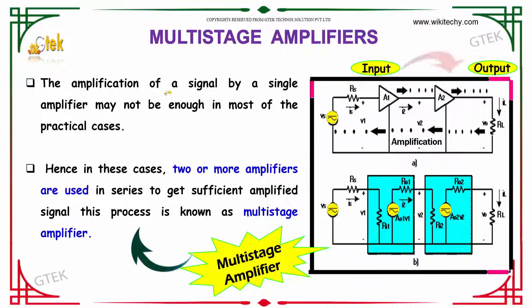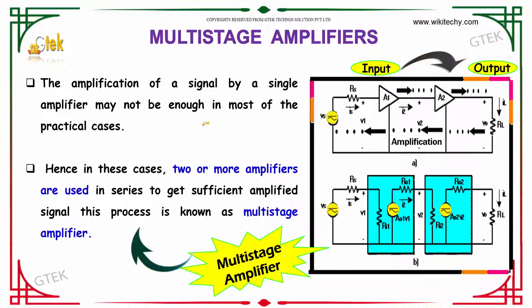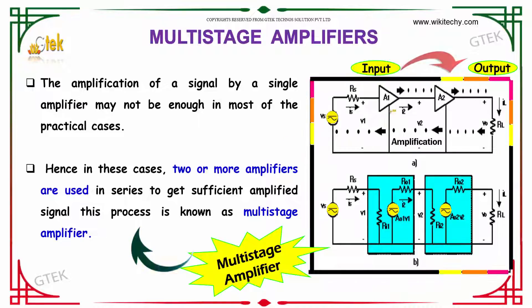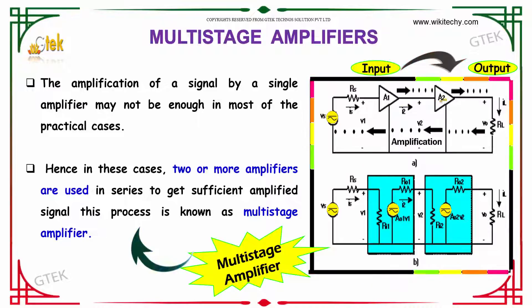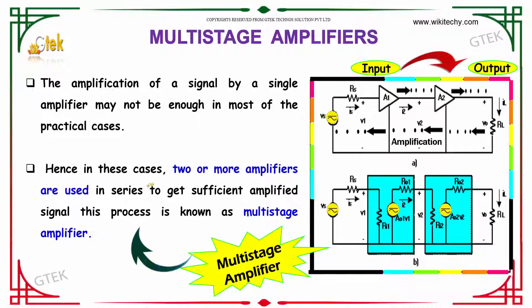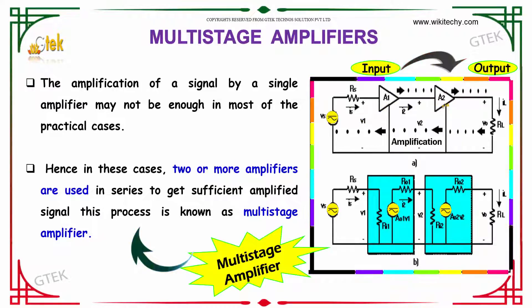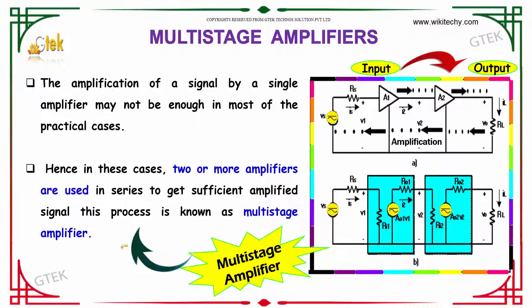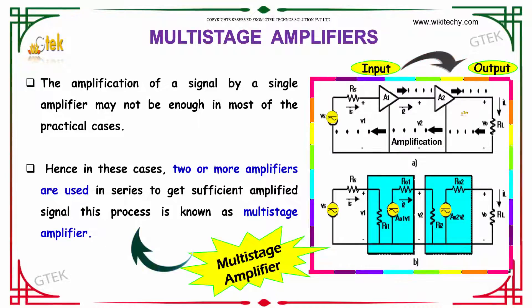The amplification of a signal by a single amplifier may not be enough in most practical cases. As you can see, the amplifier output is fed as input to another amplifier. Hence, two or more amplifiers are used in series to get a sufficiently amplified signal. That process is called a multistage amplifier.